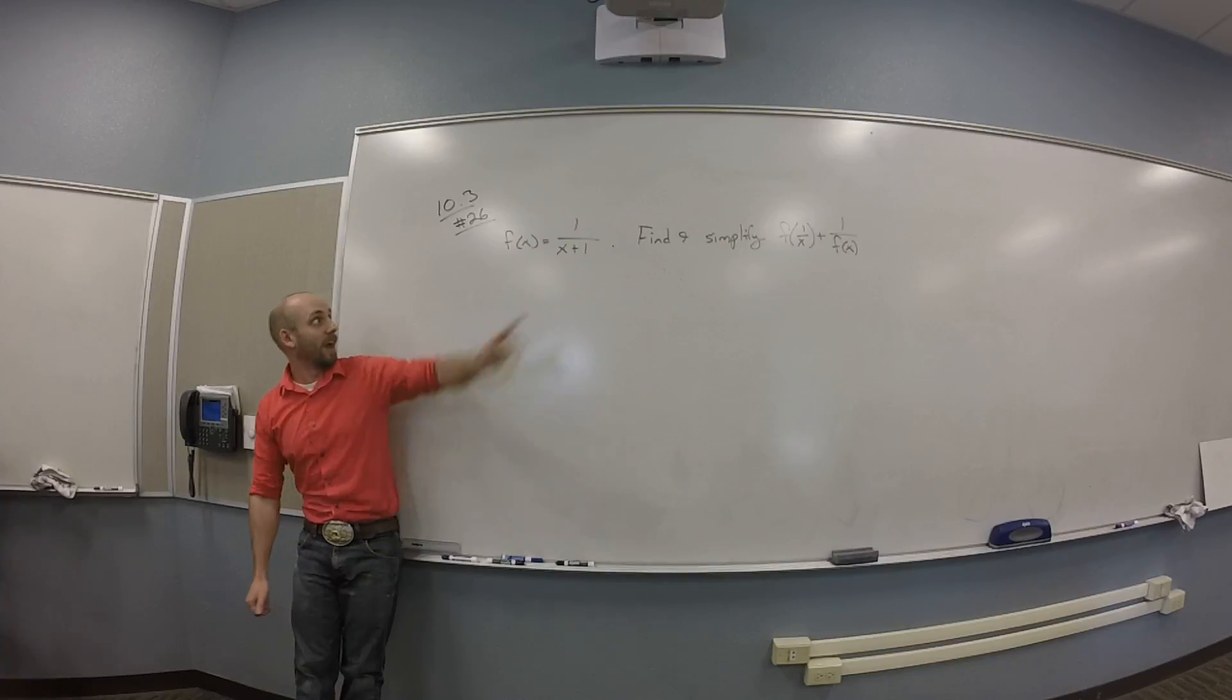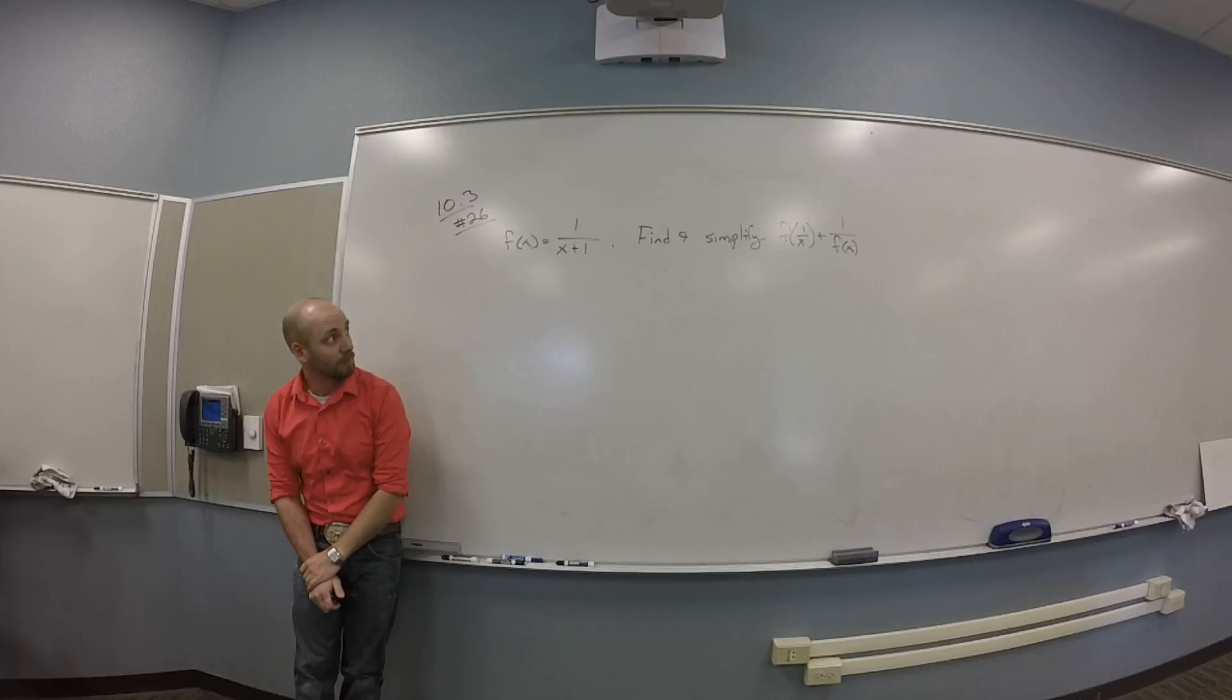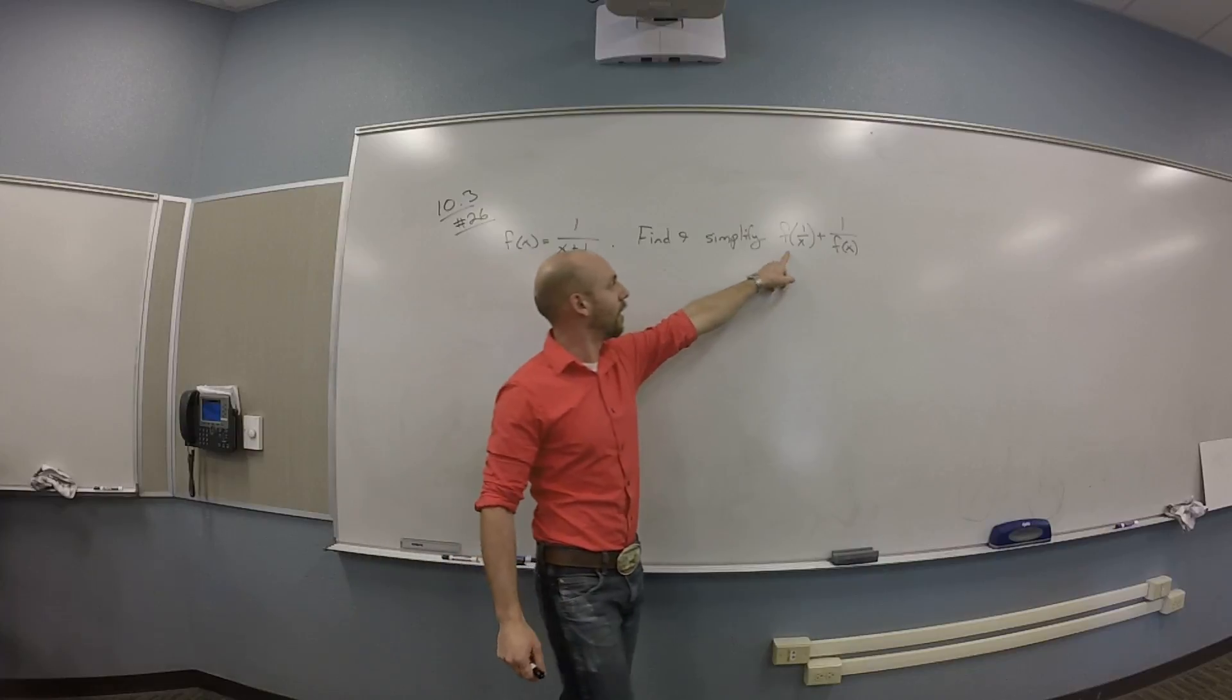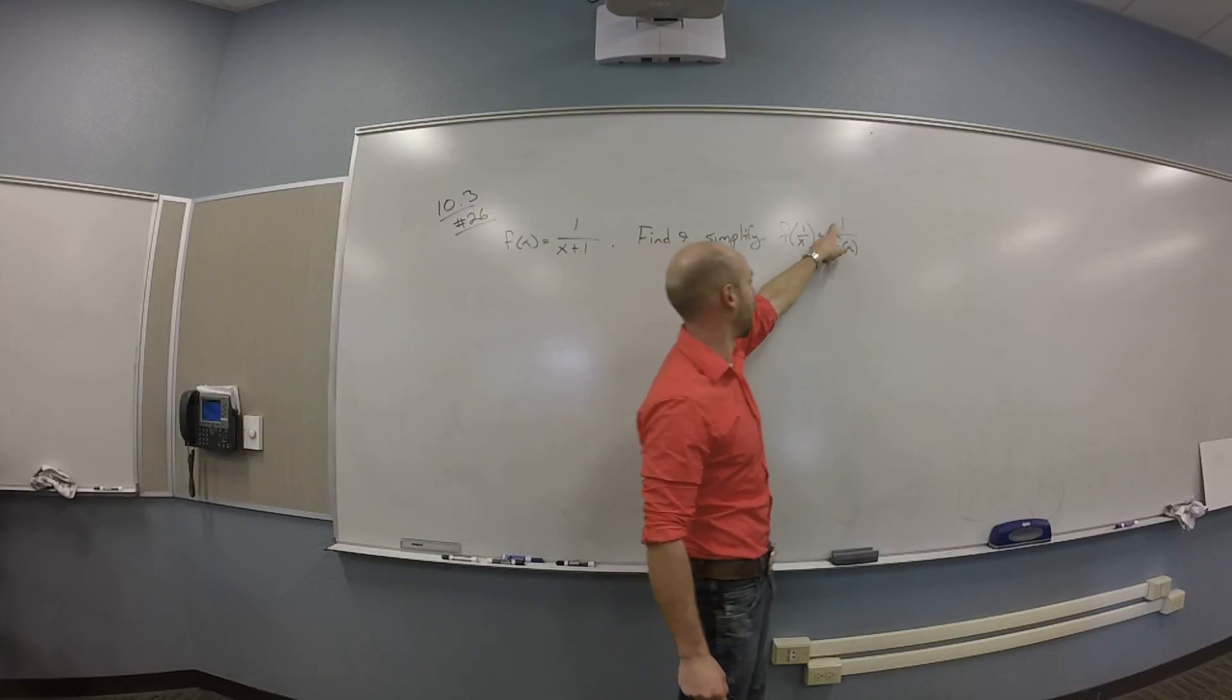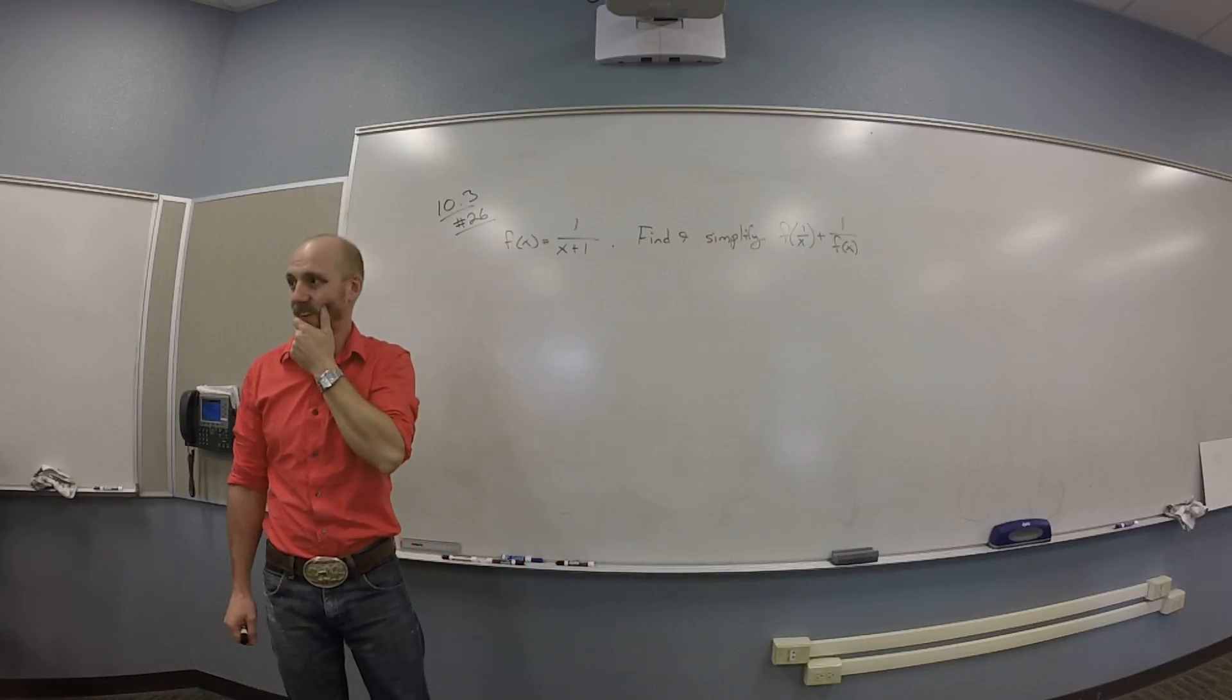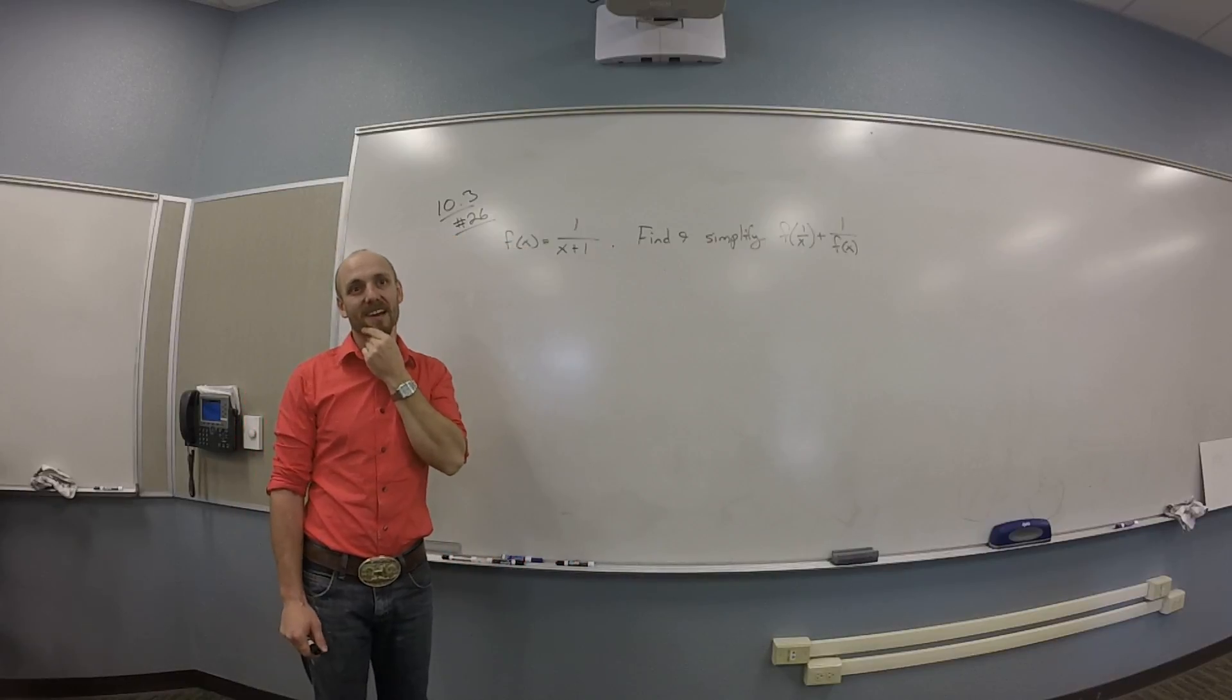So we have f of x is 1 over the quantity x plus 1. And I'm supposed to find and simplify f of 1 over x plus 1 over f of x. Weird, right? Okay, how do I do that?